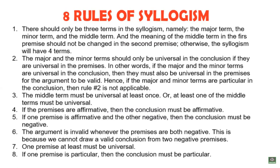Rule number two states: the major and minor terms should only be universal in the conclusion if they are universal in the premises. If the major and minor terms are particular in the conclusion, then rule number two is not applicable. Rule number three states: the middle term must be universal at least once — at least one of the middle terms must be universal.